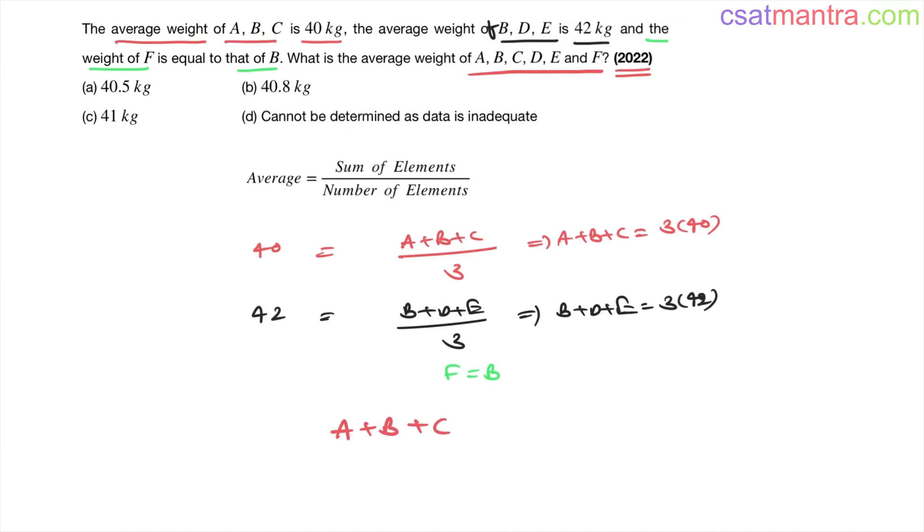A, B, C is 3 into 40. D, E, F. See, we have D plus E here. Okay, F. Okay, B is equal to F. Now I am writing B as F. That is 3 into 42. We have B is equal to F, my friend. So okay, I have written B as F.